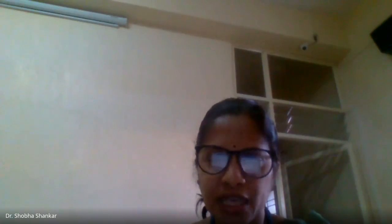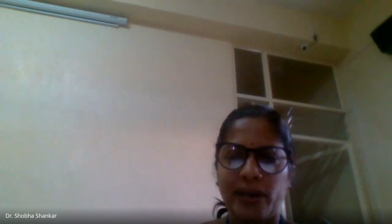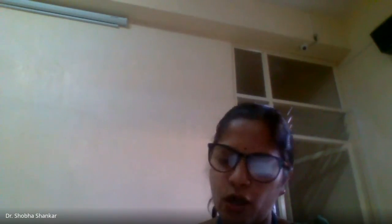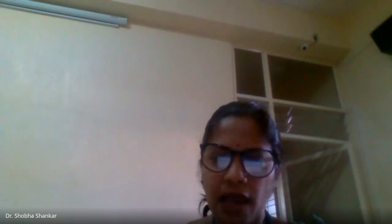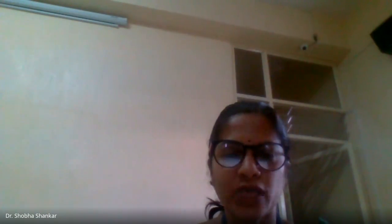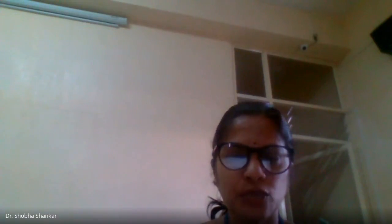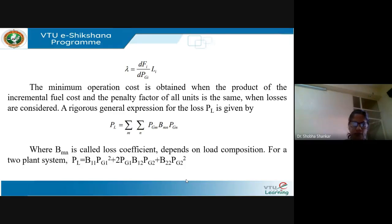The general expression for power loss in the power system is PL equals the double summation over M and N of PGM times BMN times PGN, where PGM and PGN are the power outputs of the generators and BMN corresponds to the loss coefficient, which depends on the load composition. For a two-plant system, PL equals B11*PG1² plus 2*B12*PG1*PG2 plus B22*PG2². We will see in the next session how to derive this transmission loss formula.